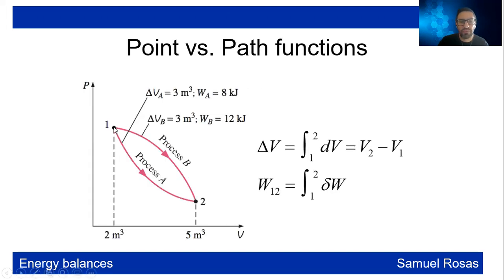If we have this process where you start in point one and you go through process A or through process B, the difference in volume is exactly the same, three cubic meters. But the work, which is the integral, which is the area below the curve, this area is different. It's less than this area below the curve. So in this case you can see that point and path functions are totally different. Once again, in point functions you only look for final and initial state, the difference. And when you have a path function, it does depend on which path it's going to be taking.